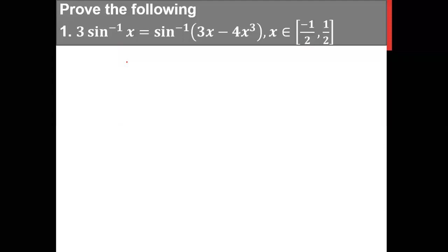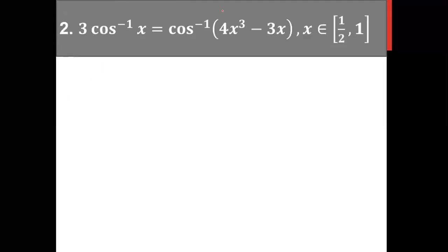As homework: try to prove 3 sin inverse x equals sin inverse(3x minus 4x³). Follow the same technique — choose an appropriate substitution for x and remember the formulas studied in first PUC. There are two problems as homework. Take a screenshot so others in the group can also work them out. Thank you.